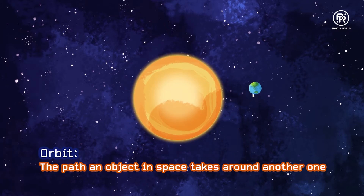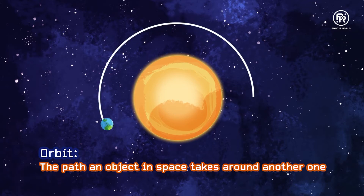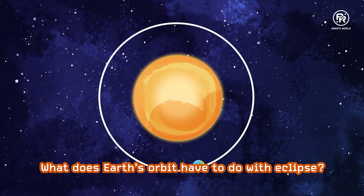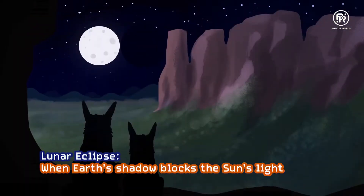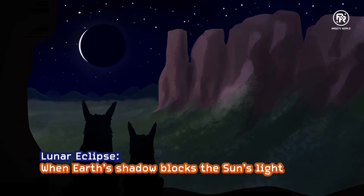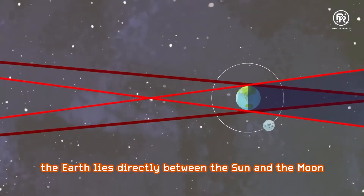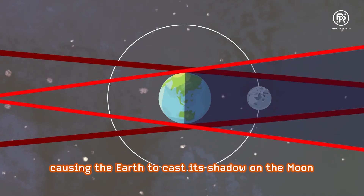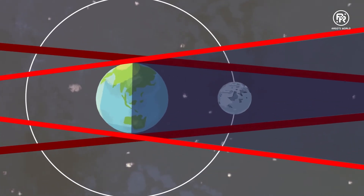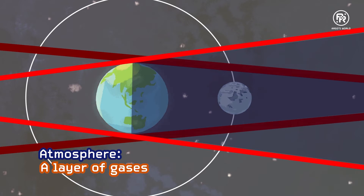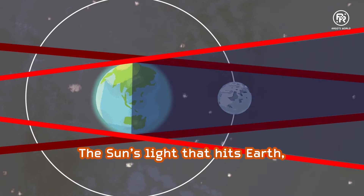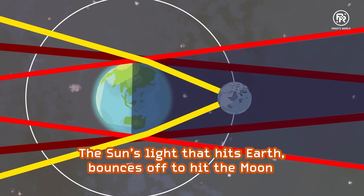Orbit simply refers to the path that an object in space takes around another one. What does this have to do with the eclipse? Well, during a total lunar eclipse, the Earth lies directly between the Sun and the Moon, causing the Earth to cast its shadow on the Moon. Now, you would think that the Moon would be thrown into darkness by Earth's shadow. However, Earth has an atmosphere, and the Sun's light that hits Earth bounces off to hit the Moon.